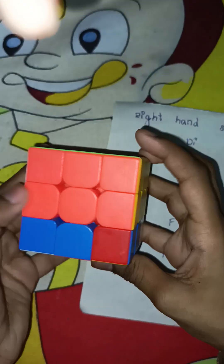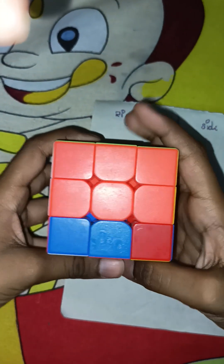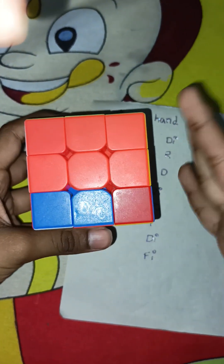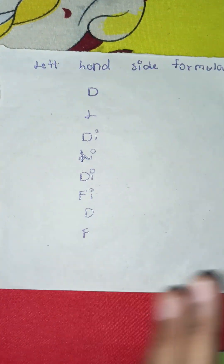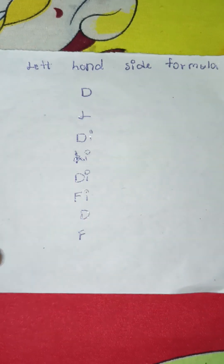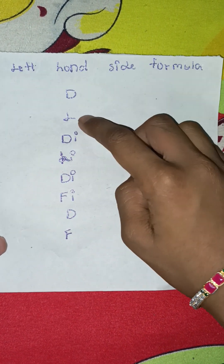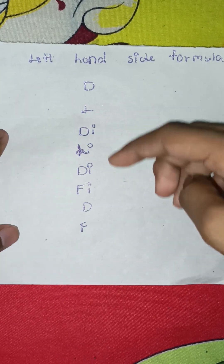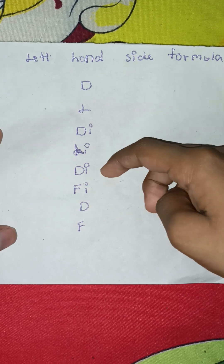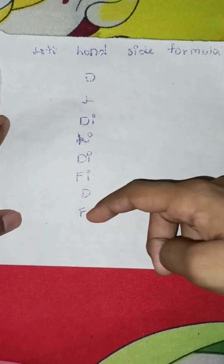Now I will show the formula for the other side. The formula is: D, L, D inverse, L inverse, D inverse, F inverse, D, F.